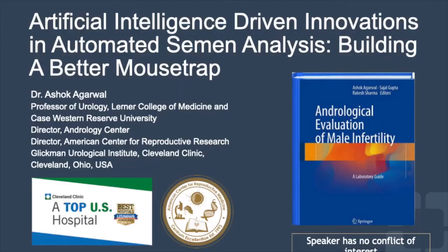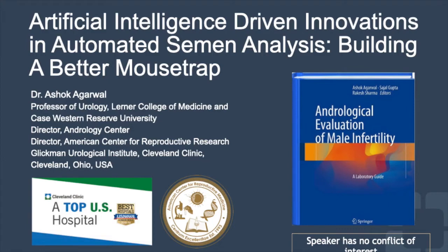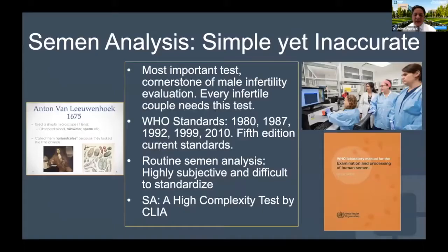Semen analysis is the most important test, which is ordered for every single infertile couple. This is the most fundamental test, used for every single couple going through an infertility workup. And for a long time, since the discovery of the microscope in the 1600s by Leeuwenhoek — about more than 300 years ago — there has been very little development in terms of changes in a routine semen analysis.